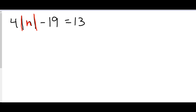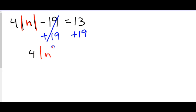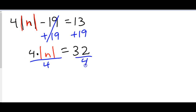To do that we start doing our opposites like we would with a normal equation. First we would need to add 19 to both sides — those cancel each other out, and 13 plus 19 is 32. Now there's a 4 in front of the absolute value bars; they act like parentheses, meaning four times those absolute value bars of n. So we divide by four, giving us the absolute value of n by itself equal to 8.